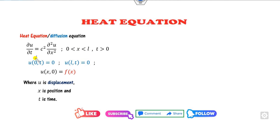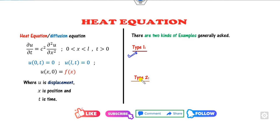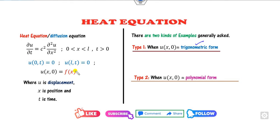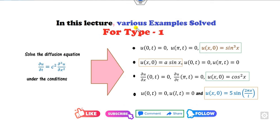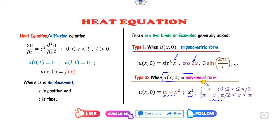We call the initial point u(0, t) = 0. Now f(x) is unknown to us. Based on the unknown nature of f(x), we can discretize examples into two categories: the first category is when the function is of trigonometric form — for example sine cubed, cos 2x, 3 times sine — and the second category is when f(x) is of polynomial form.